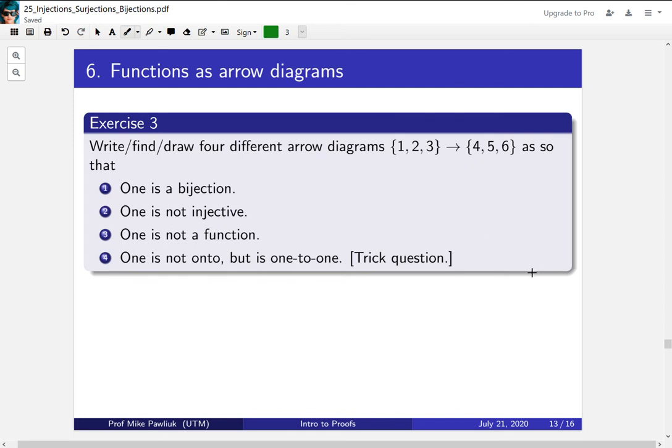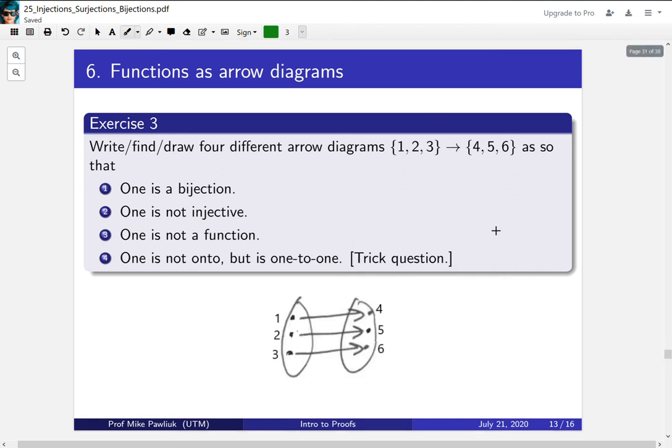As an example of what I'm asking for, here's an example of something that is a bijection. So here's an arrow diagram from {1, 2, 3} to {4, 5, 6}, and it's both injective and surjective.